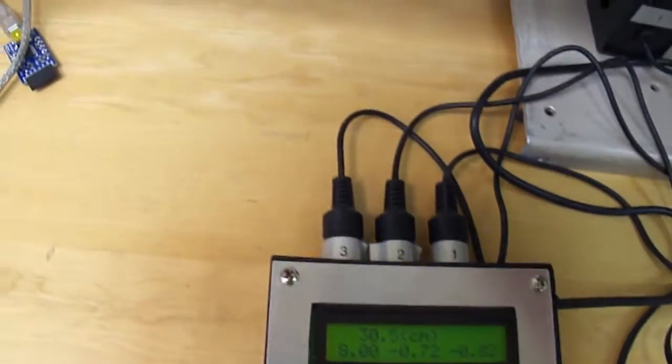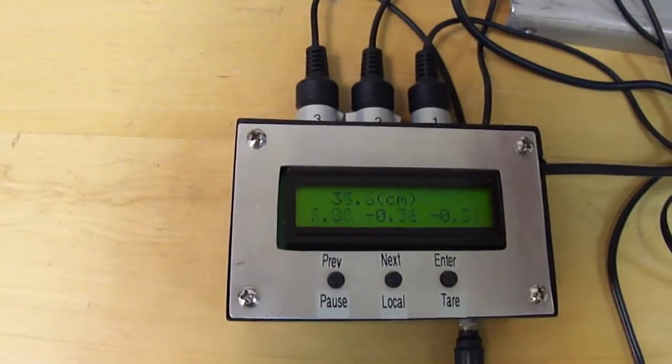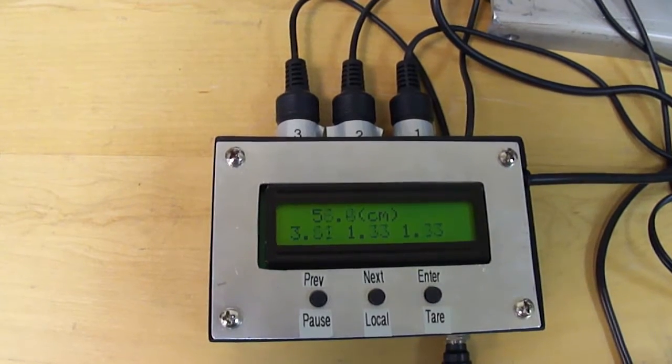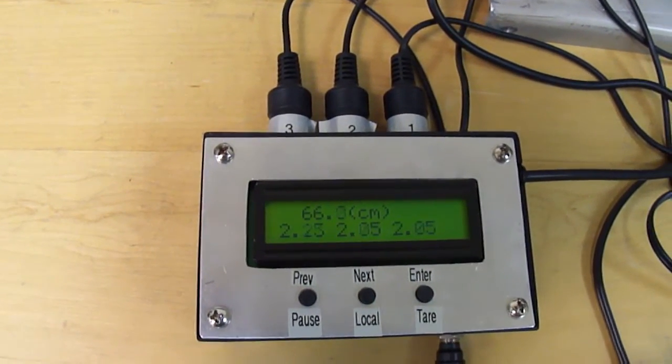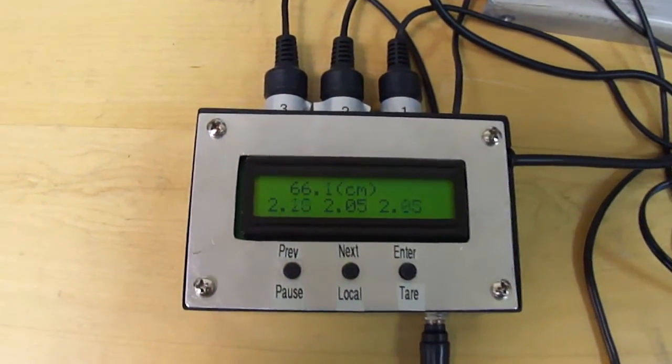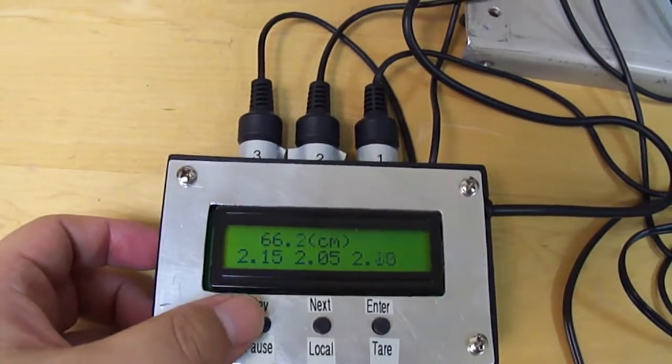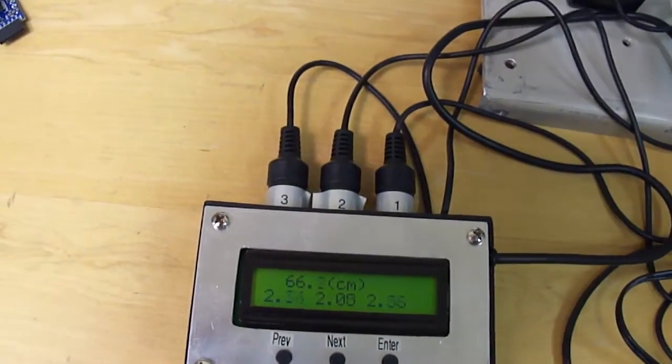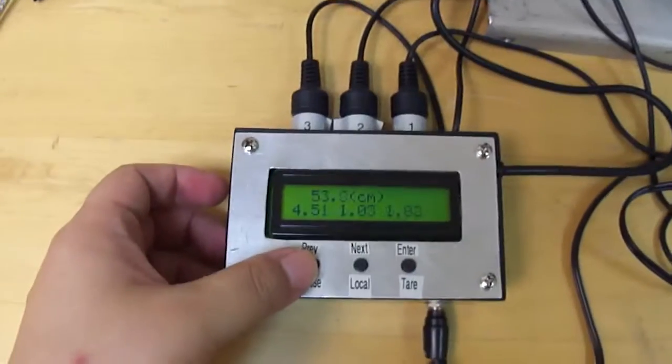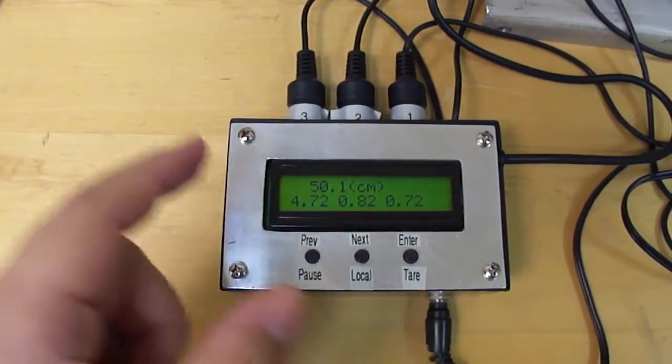And if you move the cart around the reading will change. Just pushing the cart towards the right side. Keeps changing. And if it's too fast for you to read numbers, this is actually the pause button. Let's move it a little bit. Press pause. It paused.